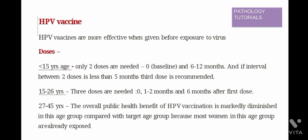Regarding the doses of HPV vaccine: if given under 15 years of age, only 2 doses are needed. The first dose is given as a baseline and the second dose is given after an interval of 6 to 12 months. If the interval between the 2 doses is less than 5 months, then a third dose is also recommended.